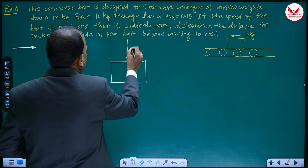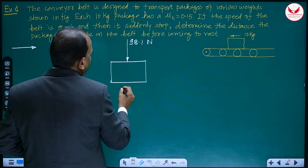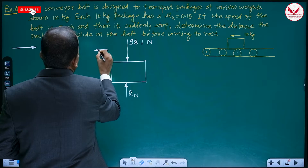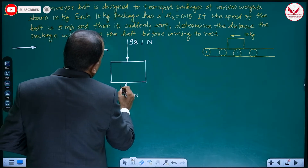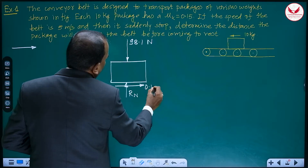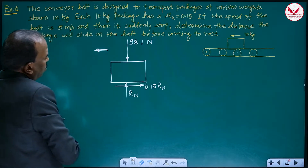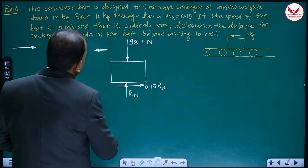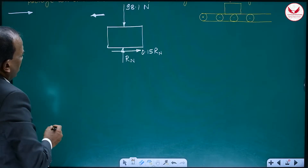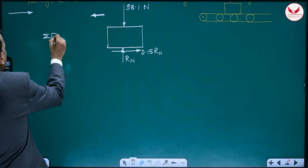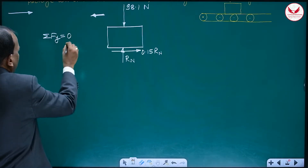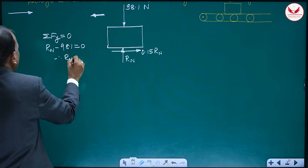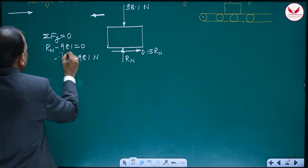For the free body diagram: 10 kg means weight is 98.1 Newtons acting downward. The normal reaction is Rn acting upward. The motion is towards the left, so the frictional force acts towards the right and equals 0.15 Rn. Using summation of forces in the y-direction equals zero (no motion in y), we get Rn minus 98.1 equals 0, hence Rn equals 98.1 Newtons.